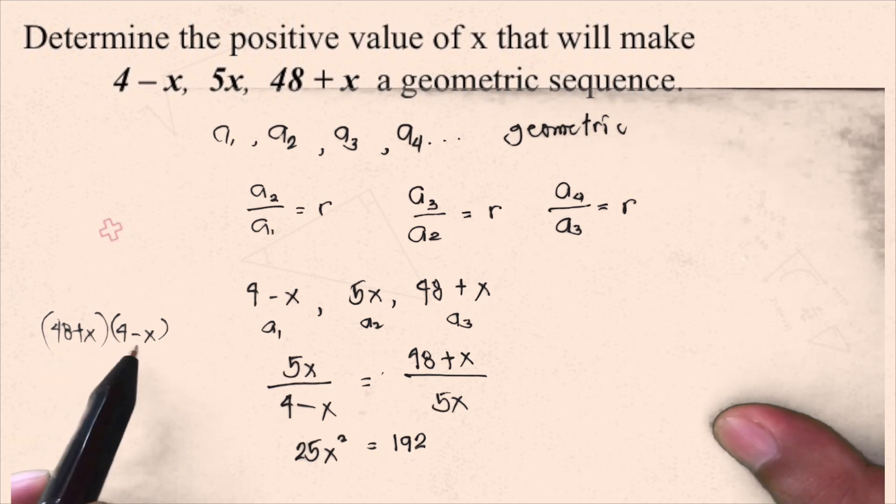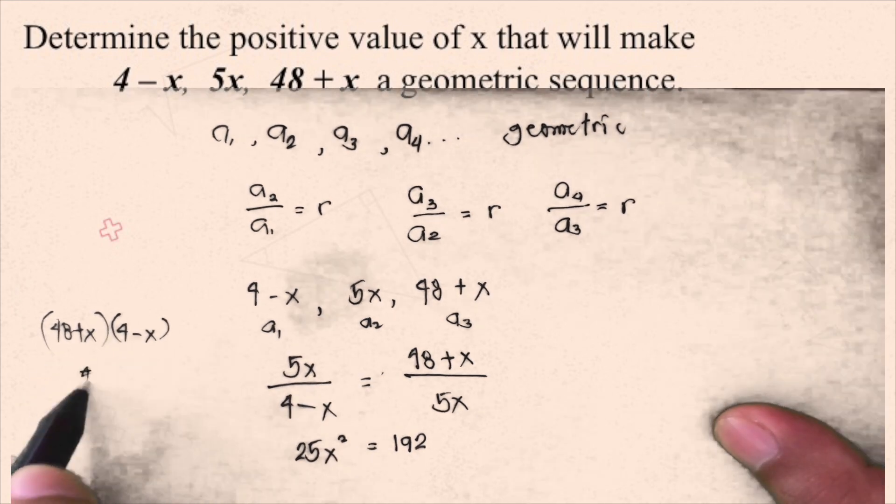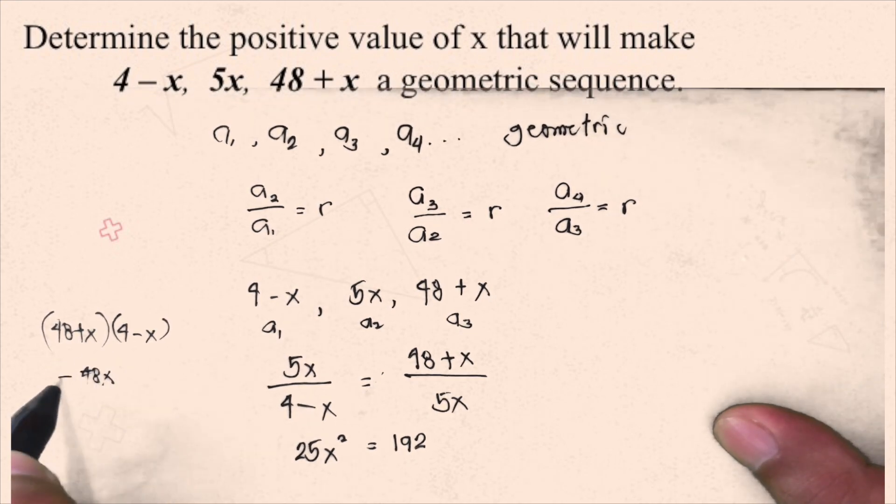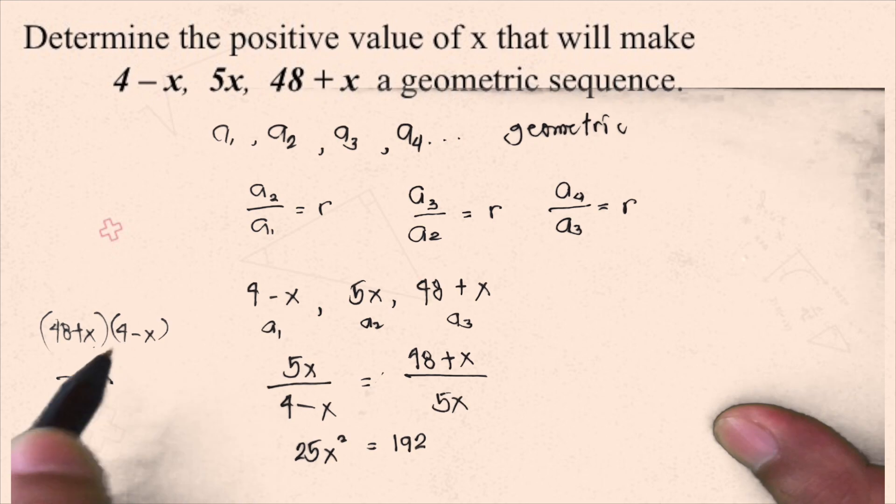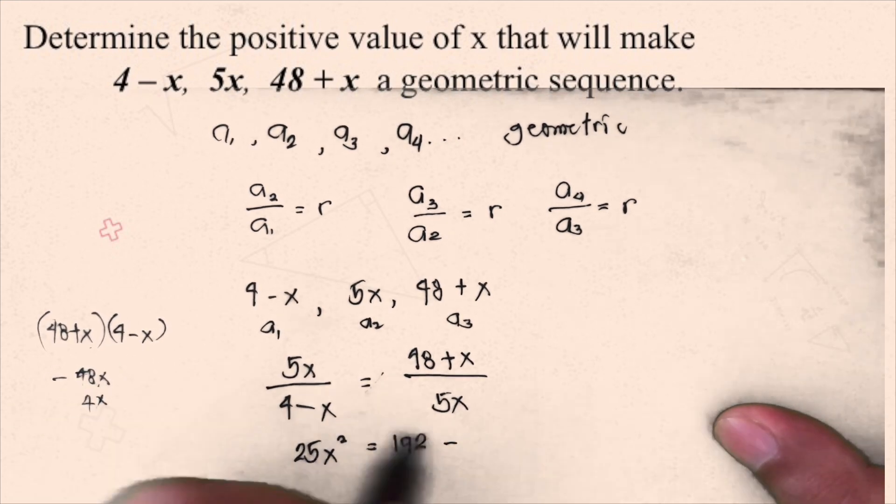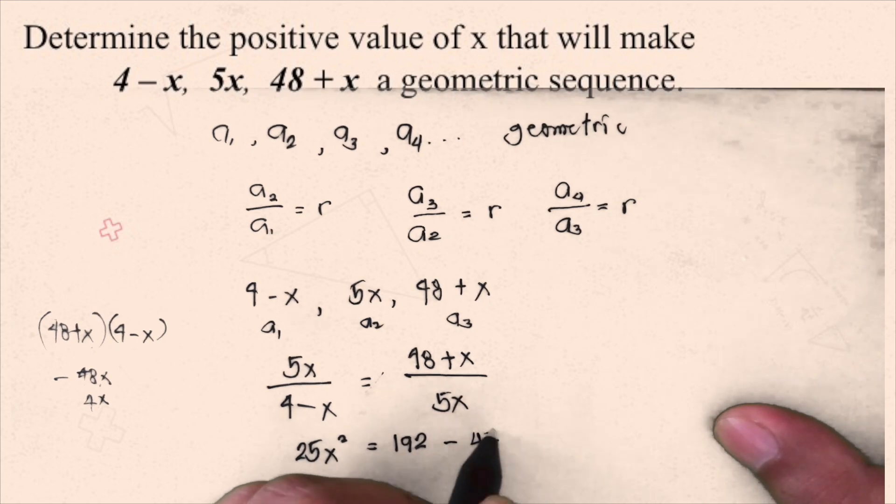And then, 48 times negative x is negative 48x, then x times 4 is 4x. So, that would be negative 44x combined.